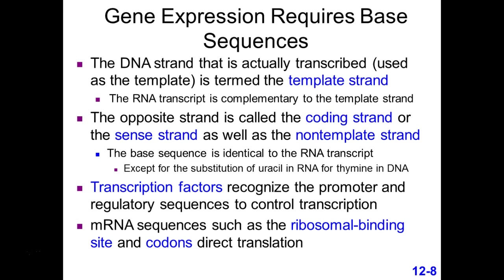DNA is double-stranded, but RNA is single-stranded. Do we need both strands of DNA to make an RNA? No, we just need one strand. Interestingly, it can be the top or bottom strand depending on how it's set up. Just like DNA polymerase, RNA polymerase has to go in the 5' to 3' direction. Remember the two strands are anti-parallel — so if it binds to the top strand it goes in one direction, and if it binds to the bottom strand it goes in the other direction.